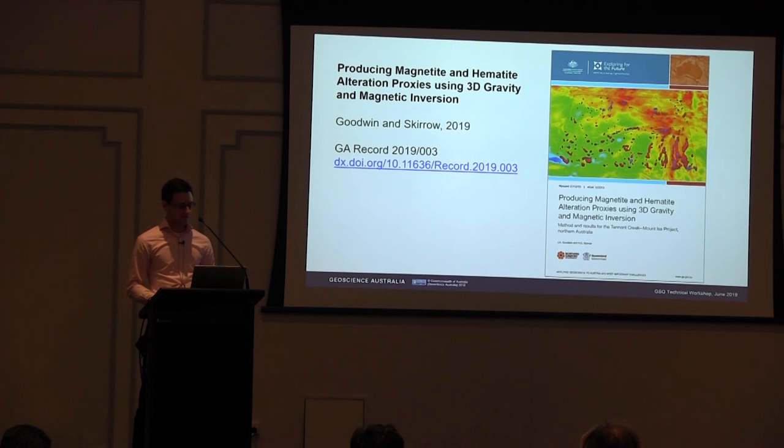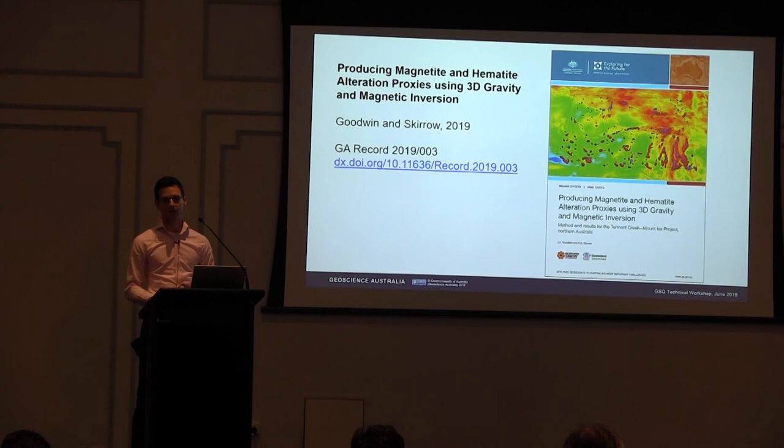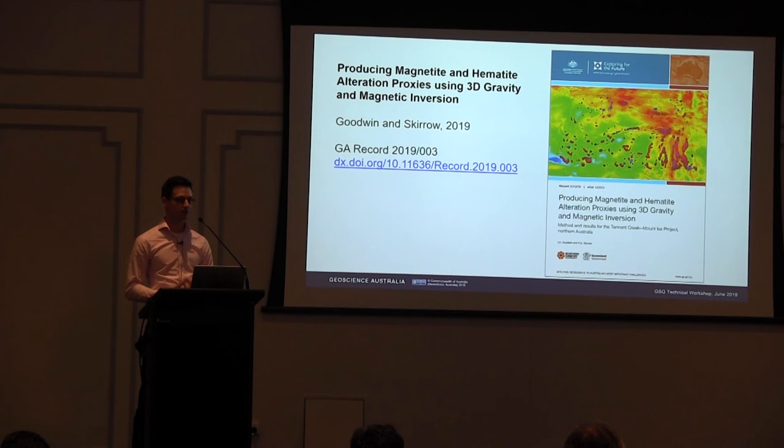This work has been released as a Geoscience Australia record 2019-03. It includes digital attachments so you can look at those images as 2D rasters. You can also take the 3D models — both the inversion models, their inputs, and the proxies made from those models — and interrogate them yourself in 3D, defining your own alteration proxies. They're freely available to use.